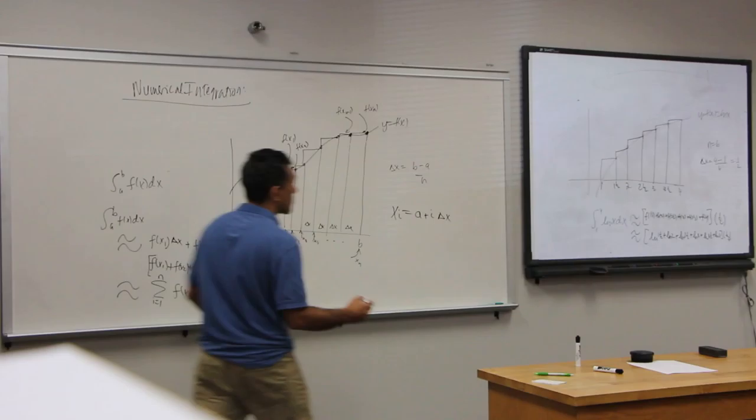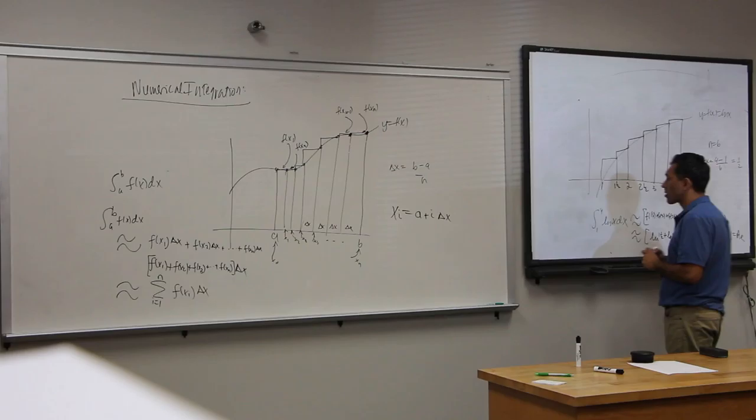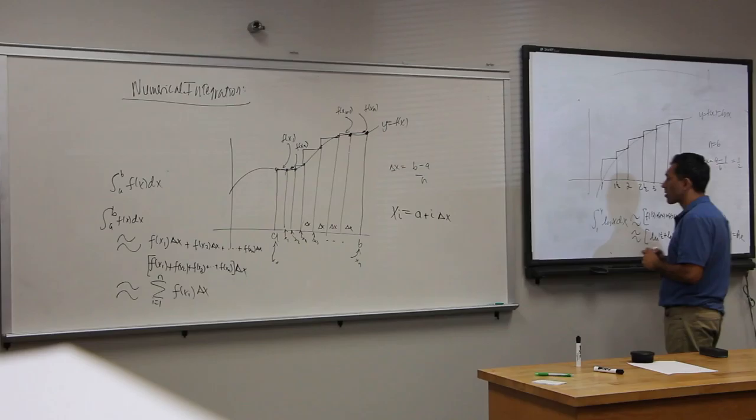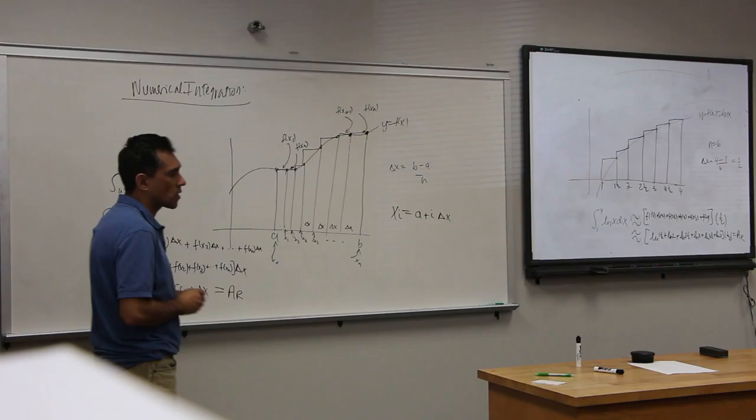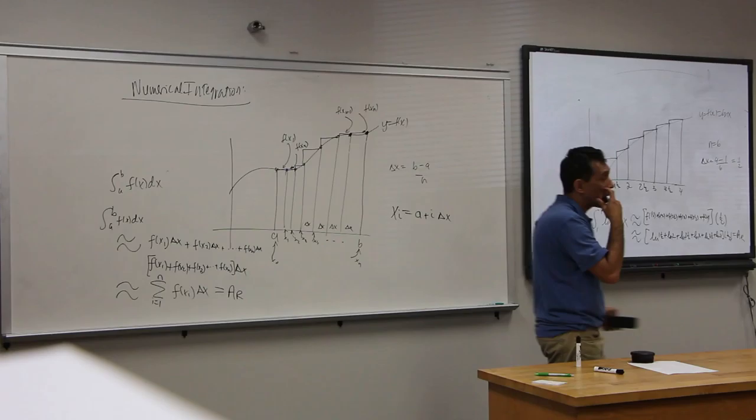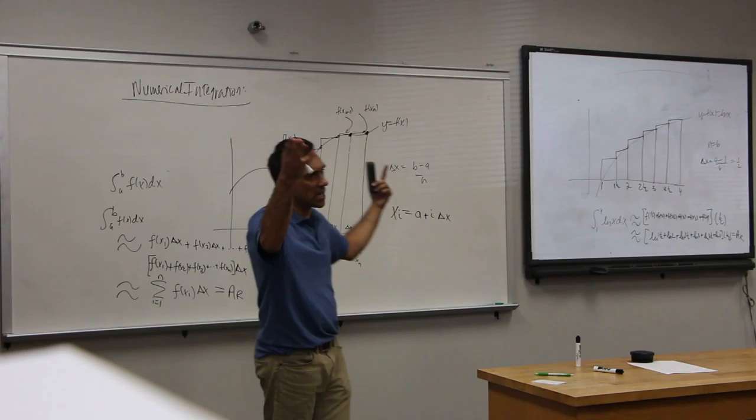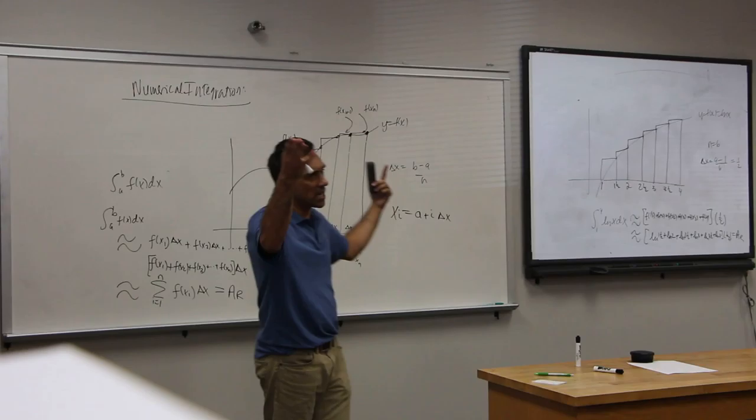And this is called a right Riemann sum. You could say, take the area from the left. You could say, go to each partition and take the height from the left as a measure of approximately how high the function is on that window. We'll do the same thing. Now, if you look at each partition and you've started, here, that this is one.